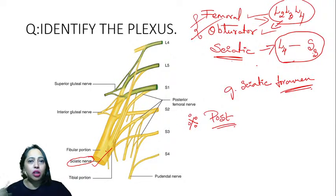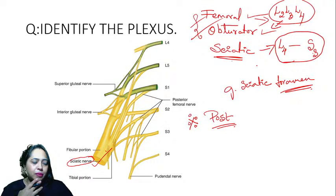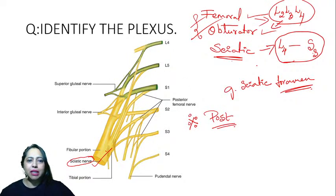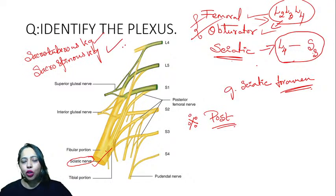The greater sciatic notch is converted into a foramen by two ligaments. When there was no ligament it was a notch — now it is a foramen. The two ligaments are the sacrotuberous and sacrospinous ligaments, which together turn the greater sciatic notch into a foramen.